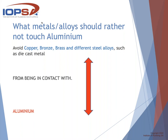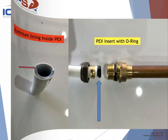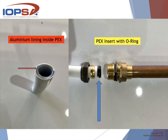What metals and alloys should not touch aluminium? Avoid copper, bronze, brass, and different steel alloys such as die-cast metals from being in contact with aluminium. Here's a clear example with PEX pipe — polyethylene extrusion — where you'll see a little aluminium lining all around the polyethylene. If that comes into contact with water and brass, the aluminium becomes an anode and starts depleting, which will cause lamination of the pipe. That's why an insert is used: it provides hardness for the brass olive and an O-ring prevents water and brass from contacting the aluminium.